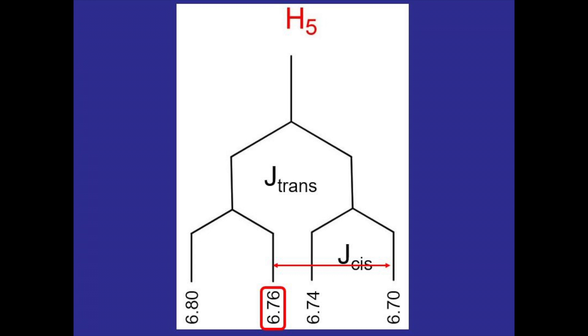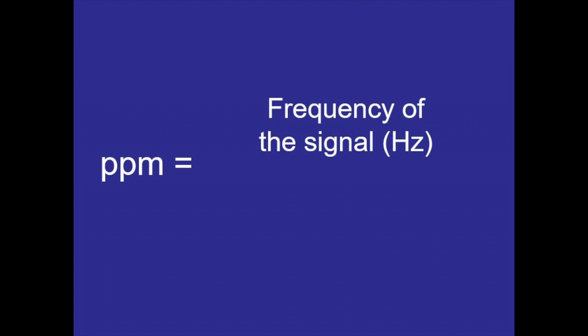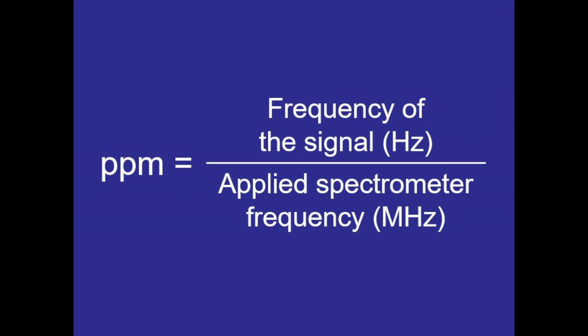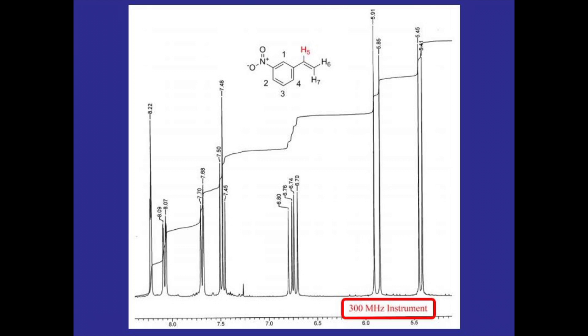Now we'll want these coupling constants in the standard unit of Hertz, but currently everything on the H-NMR has been converted to PPMs, and this is done by taking the frequency of the signal in Hertz and dividing it by the applied spectrometer frequency in megahertz, therefore parts per million because megahertz are one million times the magnitude of Hertz. So if I wanted to get this signal back to Hertz, I could just take the PPM value given and multiply it by the spectrometer frequency, which in this example would be 300 megahertz.